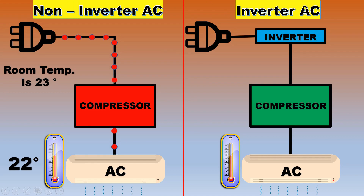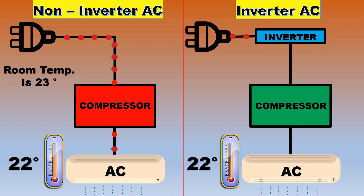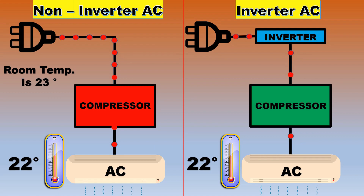Now we will see the working of an inverter AC. As soon as we switch on the power and set our desired temperature to 22 degrees Celsius, the power will be transmitted to the inverter which will control the power to our desired temperature — say 22 degrees — and then transmit this controlled power to the compressor. The compressor will then work with the efficiency of only 22 degrees to provide the chilling effect to the indoor unit and circulate in our room to attain our desired temperature. In this way, it saves power and maintains the desired temperature in our room. The thing which should be noted is that the compressor does not work with its full capacity; only the required power is supplied to it and it will remain continuously on, unlike a non-inverter AC where the compressor kept switching on and off. In this way, it saves our power consumption and attains our desired temperature.